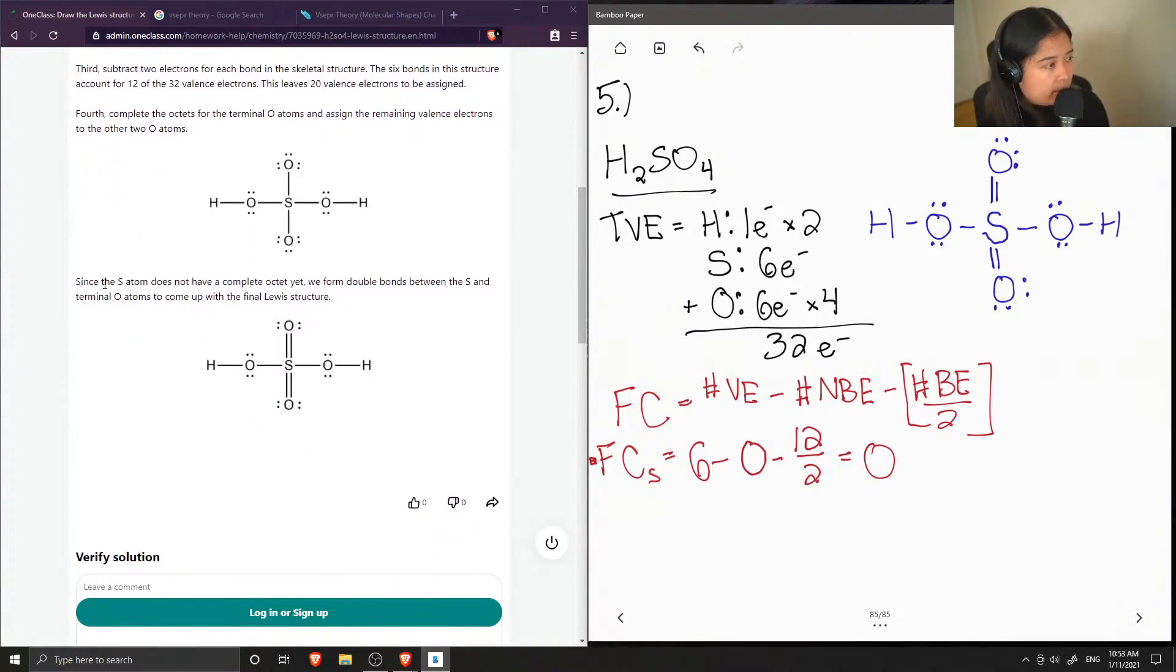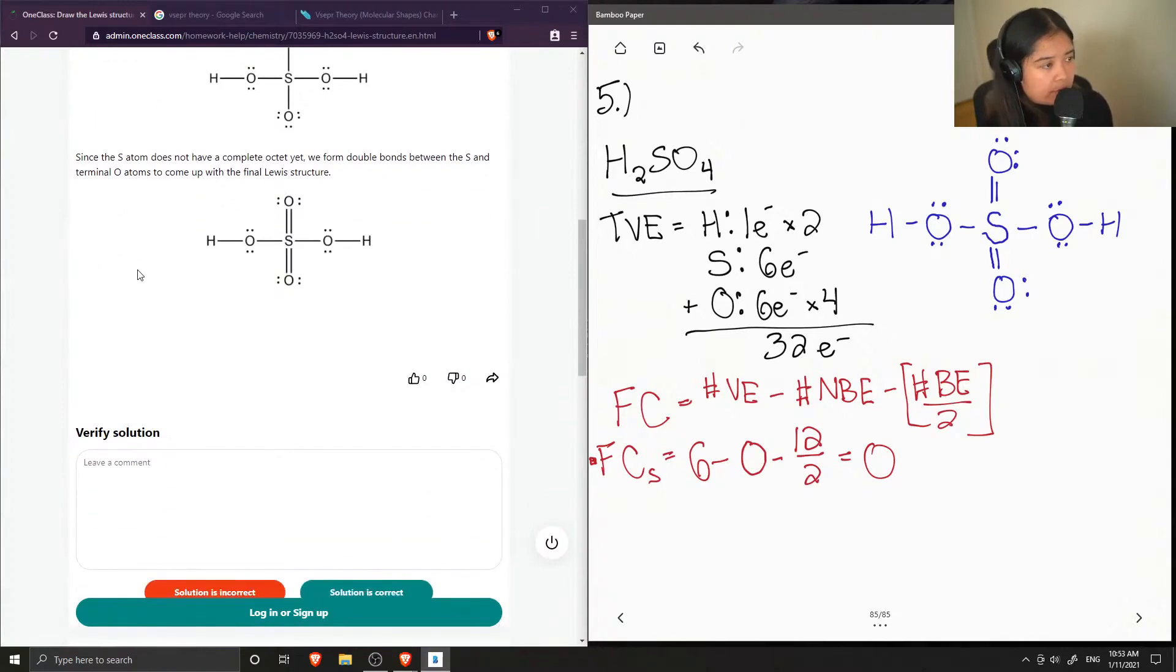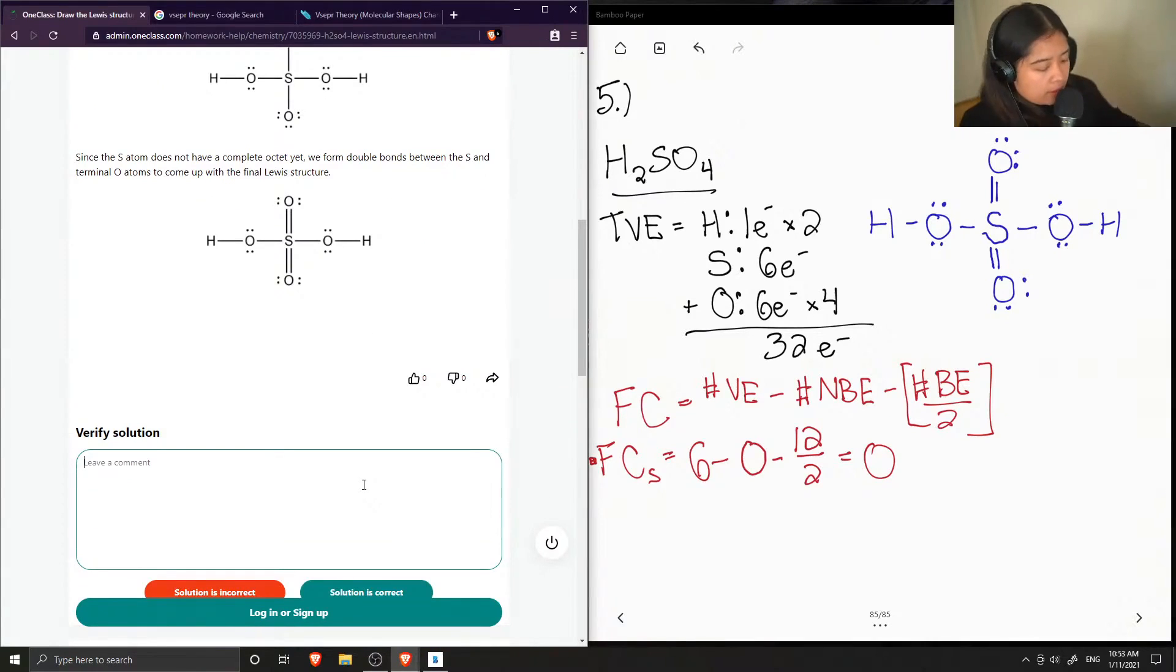Fourth, complete the octets for the terminal oxygen atoms and assign the remaining valence electrons for the other two oxygen atoms. And now, since the sulfur atom does not have a complete octet yet, we form double bonds between the sulfur and terminal oxygen atoms to come up with the final Lewis structure. Okay, so this solution is correct.